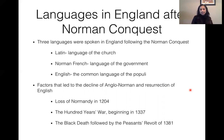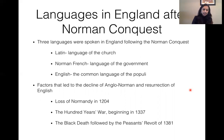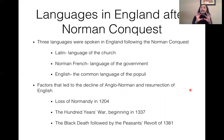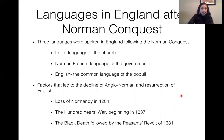There were some factors that led to the decline of Anglo-Norman and the resurrection of English in England. These were the loss of Normandy in 1204, the Hundred Years' War that began in 1337, and the Black Death followed by the Peasants' Revolt of 1381. Many political changes altered the landscape of the Anglo-Norman dialect, and English was kind of restored back into power after all these events happened.